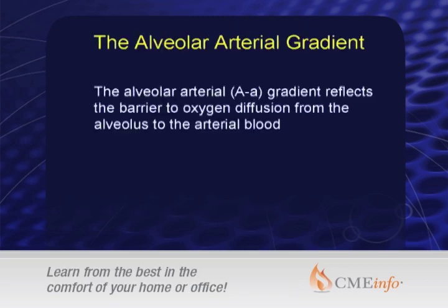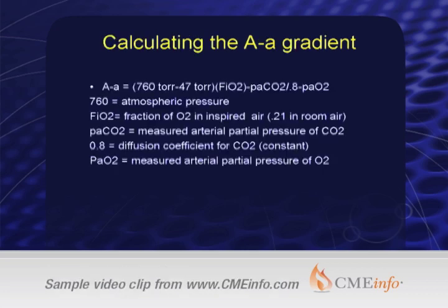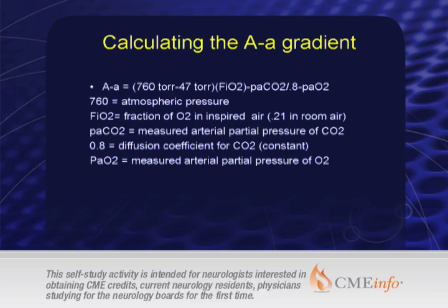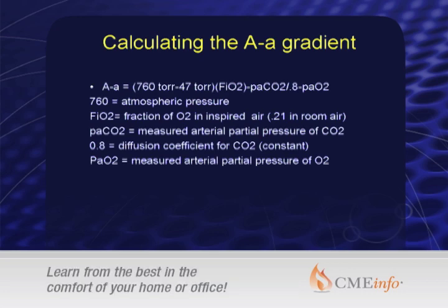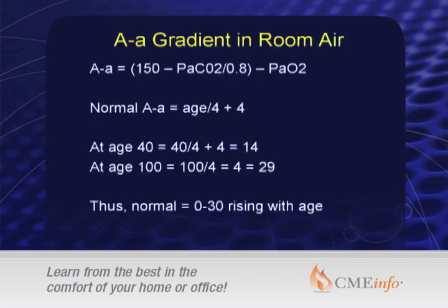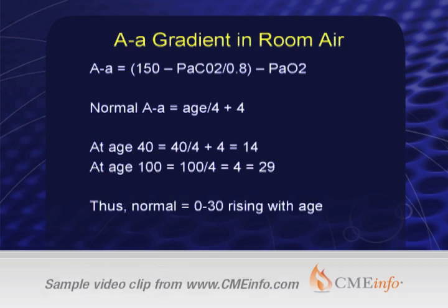The first concept is the AA gradient. This difference reflects the barrier to oxygen diffusion from the alveolus into the arterial blood. The capital A is alveolus and the small a is arterial. You can see the formula here: 760 mmHg minus 47 Torr, times the FiO2, minus the PaCO2 over 0.8, minus the PaO2. Plugging in atmospheric pressure and the 21% oxygen fraction, we can simplify this to: 150 minus the PaCO2 over 0.8 minus the PaO2.